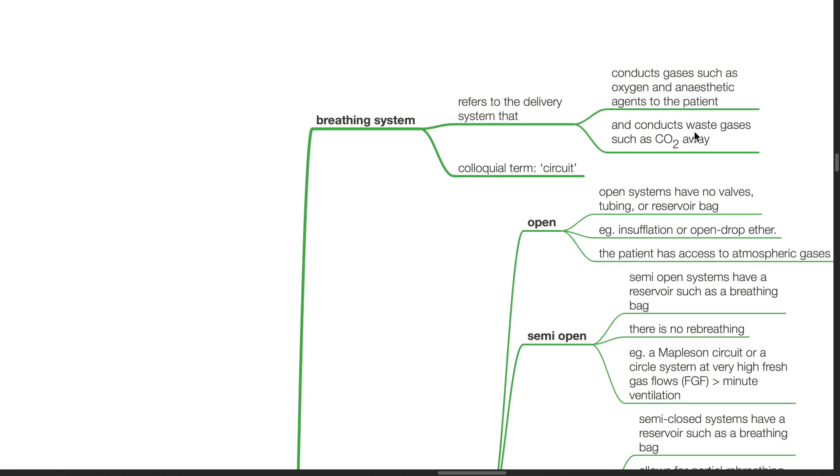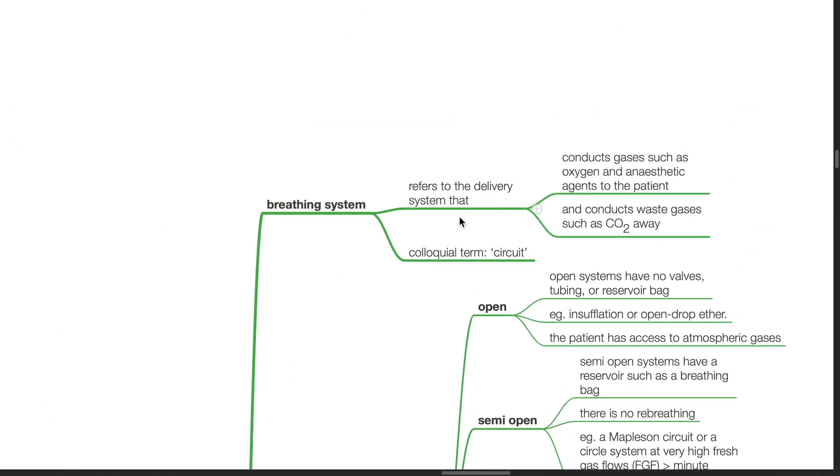Introduction. Breathing system refers to the delivery system that conducts gases such as oxygen and anesthetic agents to the patient and conducts waste gases such as CO2 away. The colloquial term is circuit.